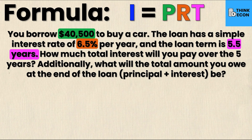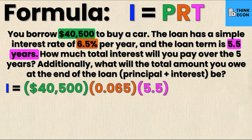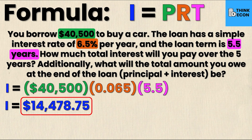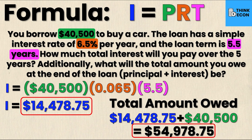Substituting into the formula, I get: interest equals $40,500 times 0.065 (that's 6.5 divided by 100) times 5.5. Simplifying, the interest amount is $14,478.75 — that's the amount I owe on top of the original $40,500. To find the total amount owed, I add the interest and the principal together, giving a total of $54,978.75. That is the total amount I will end up paying for that car with a simple interest rate of 6.5% over 5.5 years.